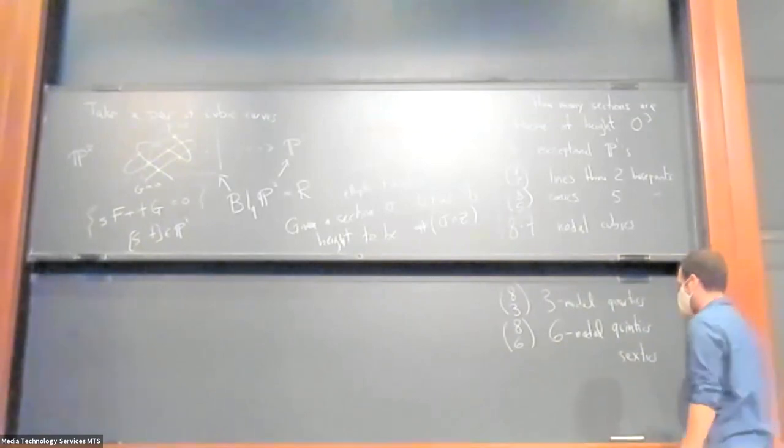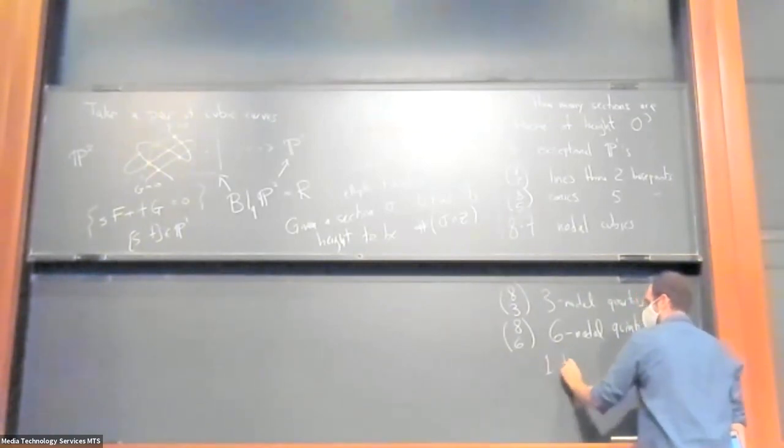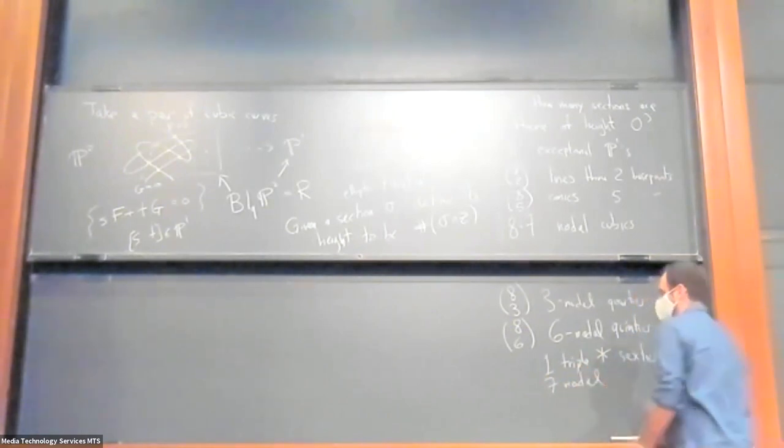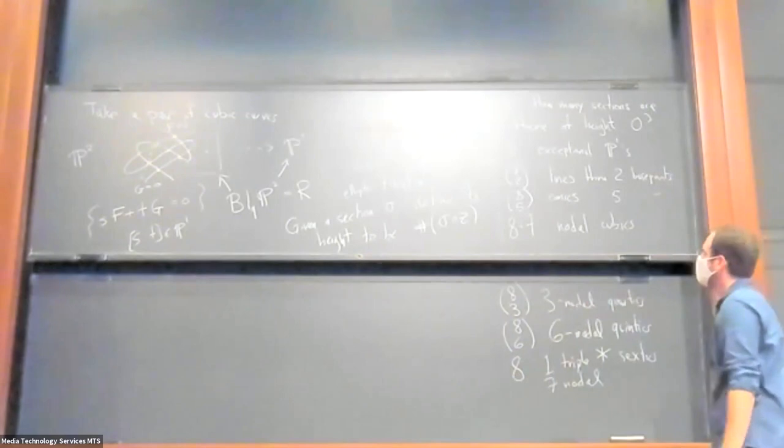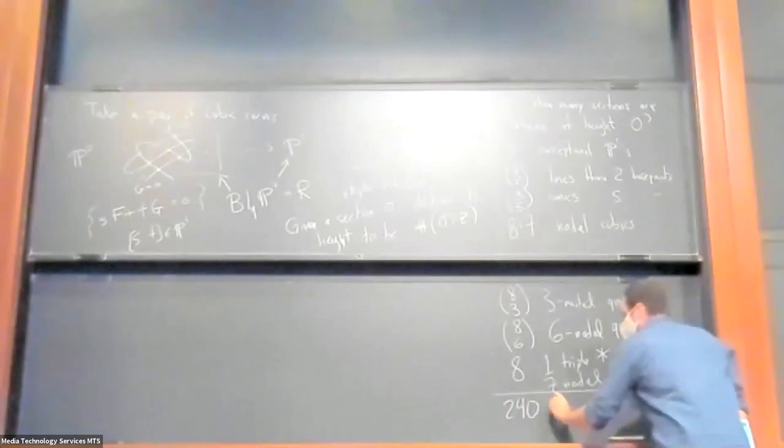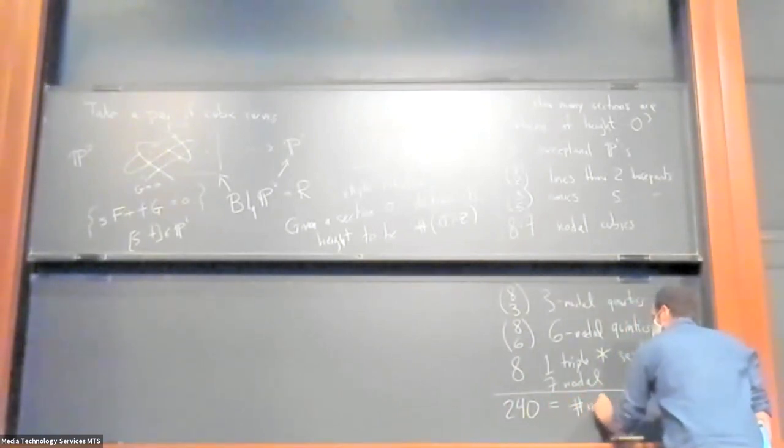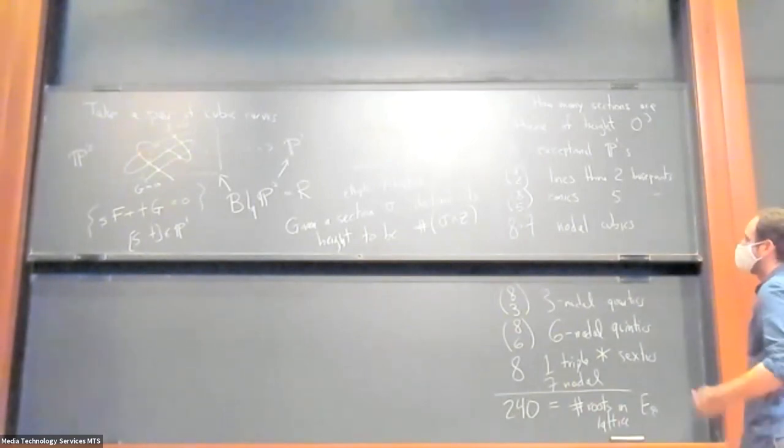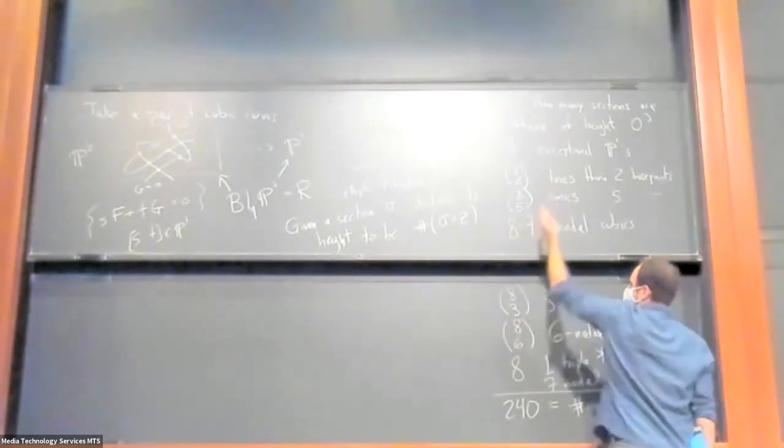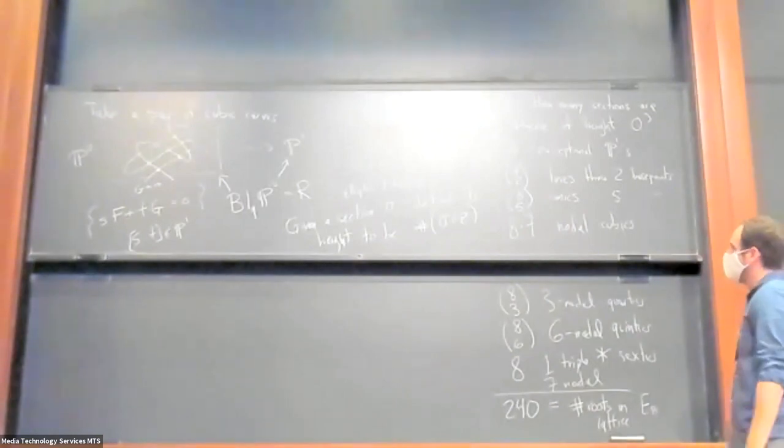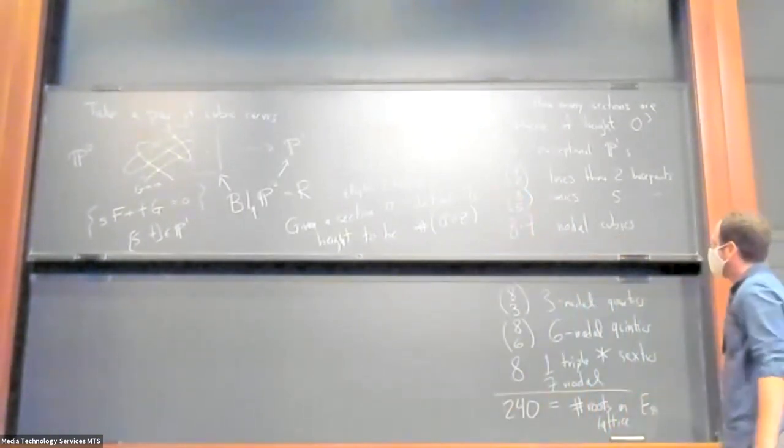And then the last one is sextics. And there, if you work out the genus to make it correct, you're going to need to have one triple point, asterisk at one of the base points, and then seven nodes as well. And so the only choice there is the location of that triple point. So that's eight. So you might be wondering why I went to all this trouble. But if you add up the total to answer the question, you end up with 240. And this 240 number is the same as the number of roots in the E8 lattice. And that's actually not an accident. And furthermore, you can kind of see that there's a symmetry to this list. So the eight matches with the eight at the bottom and so on. And that corresponds to just inverting the lattice, and it also corresponds to just inverting the section with respect to the elliptic curve.